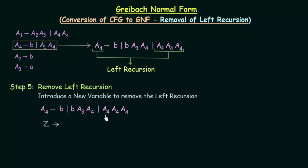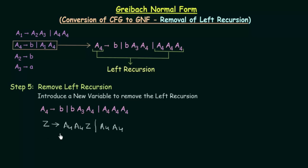The variables that follow the problematic A4 are A4, A4. So Z gives A4, A4, Z and also A4, A4 without Z. Just take the variables that follow the problematic one and write it along with the new variable once and without the new variable once. This is how you make the production for the new variable Z.